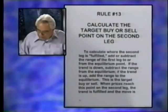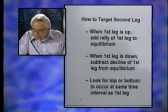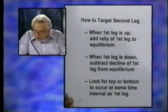So once again: when the first leg is up, add the rally of the first leg to the equilibrium. When the first leg is down, subtract the decline of the first leg from the equilibrium. Also look for the top or bottom to occur at the same time interval — that's putting both price and time together.